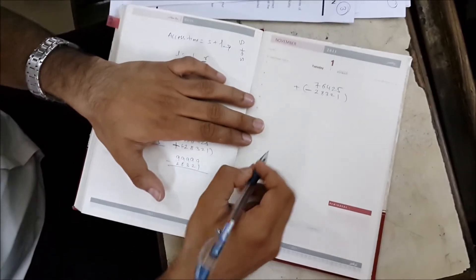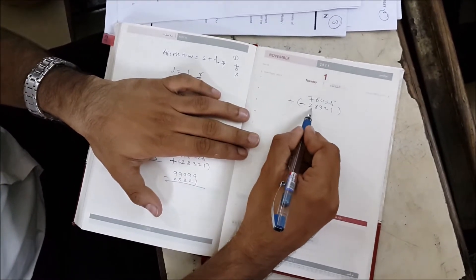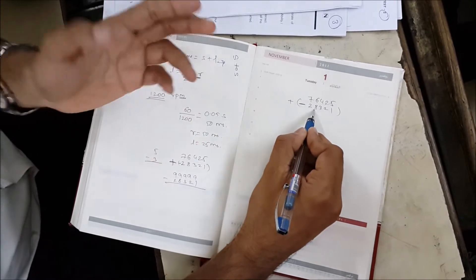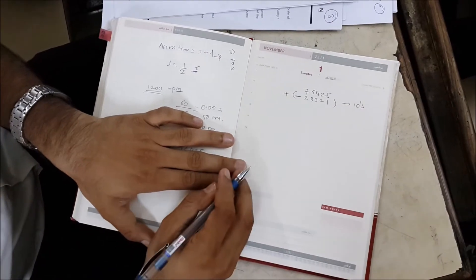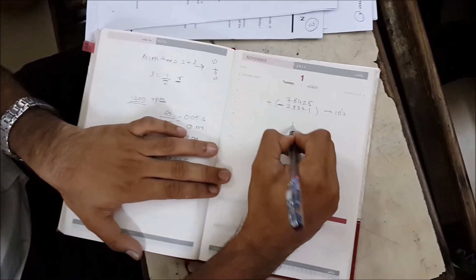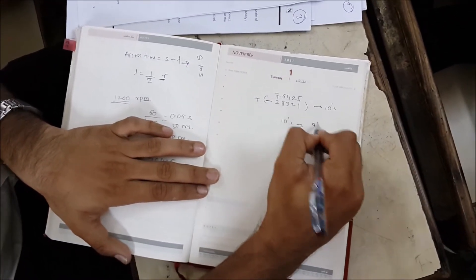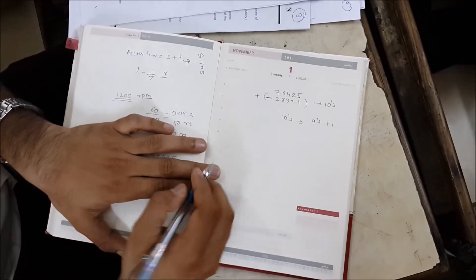Since we cannot use a negative symbol here, we have to convert this negative number into a positive number. We have to convert the positive number with the help of ten's complement. To find ten's complement, ten's complement equals nine's complement plus 1.